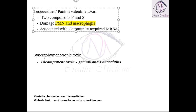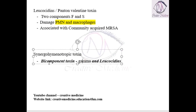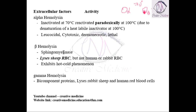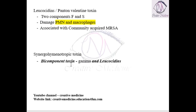We also have Synergohymenotropic Toxin. This is a bi-component toxin — that is, it has two components. One component is Leucocidin, which is the Panton-Valentine Toxin, and the second component is Gamma-Hemolysin. These two are the components of Synergohymenotropic Toxin.